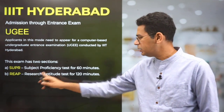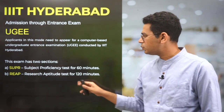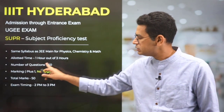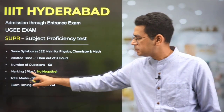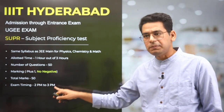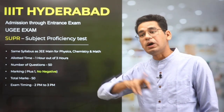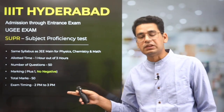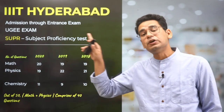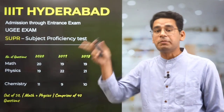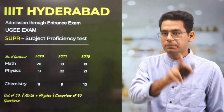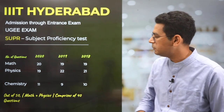Just a quick highlight of what is in the exam: Super is 60 minutes, REAP is 160 minutes. In Super, there are 50 questions, plus one, no negative, total marks 50, from 2 PM to 3 PM. Once you are done at 3 PM, you will automatically be shifted to the REAP exam and you cannot come back to the Super exam.